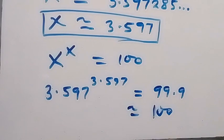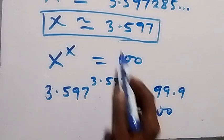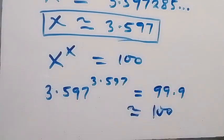Then from here we discover that since we got approximate answer here to be 100, then we can conclude from this solution that the value of x is approximately 3.597. Thank you for watching.